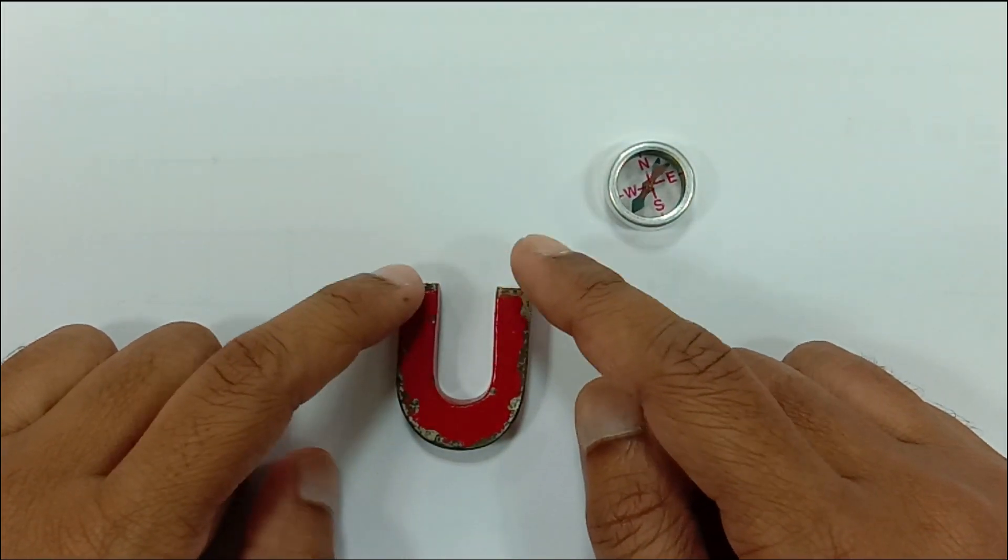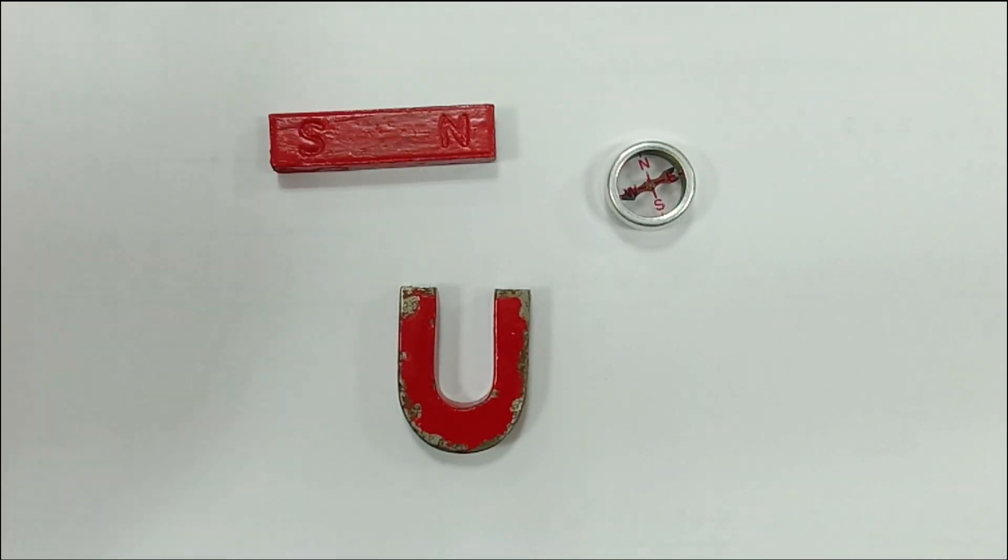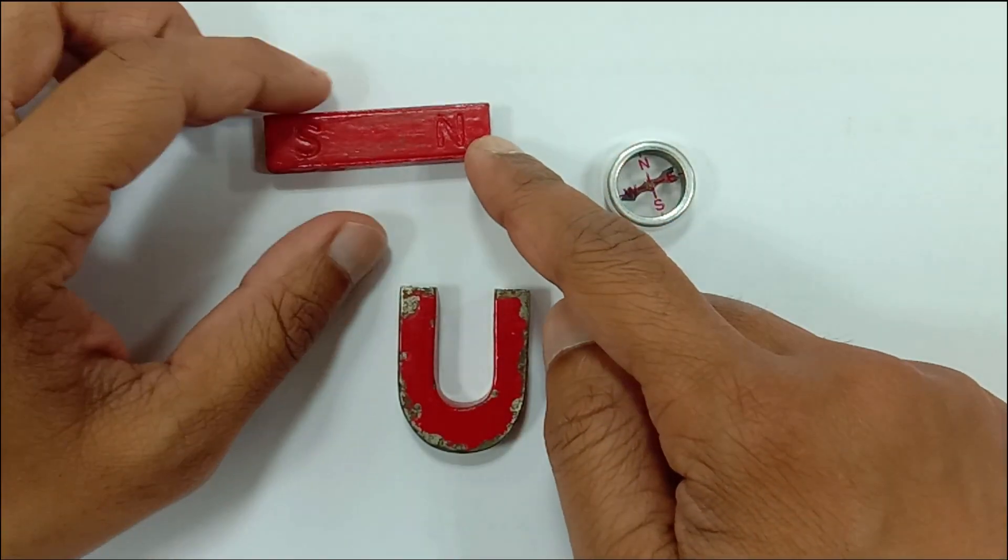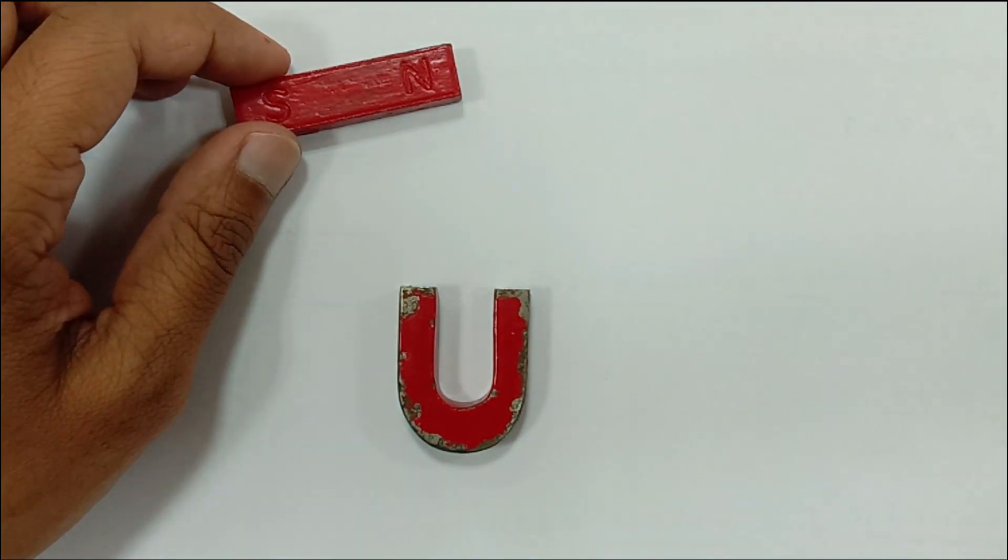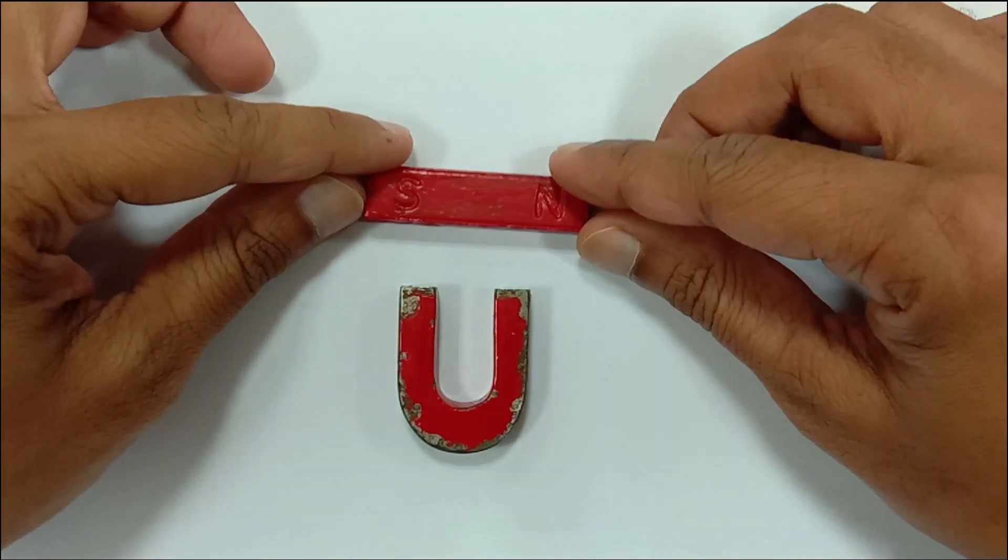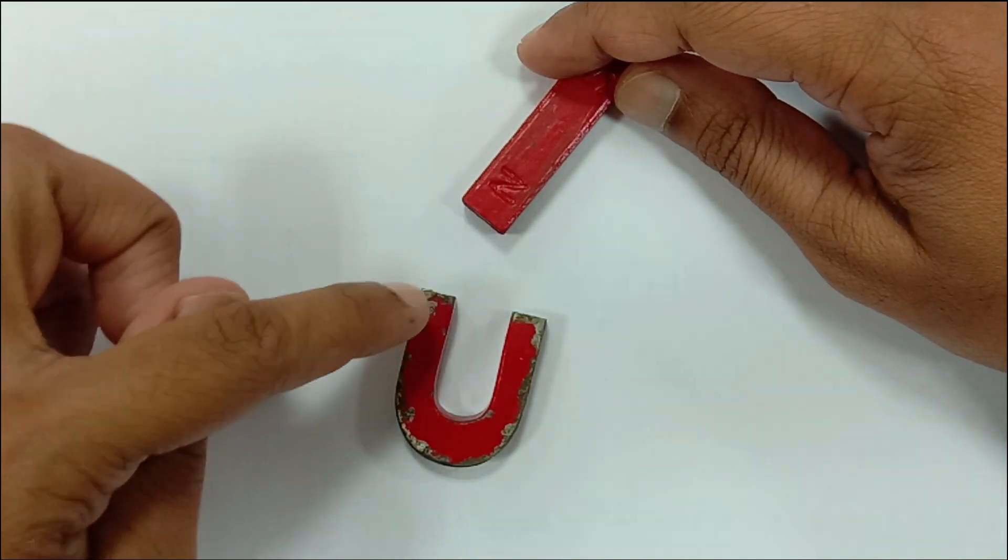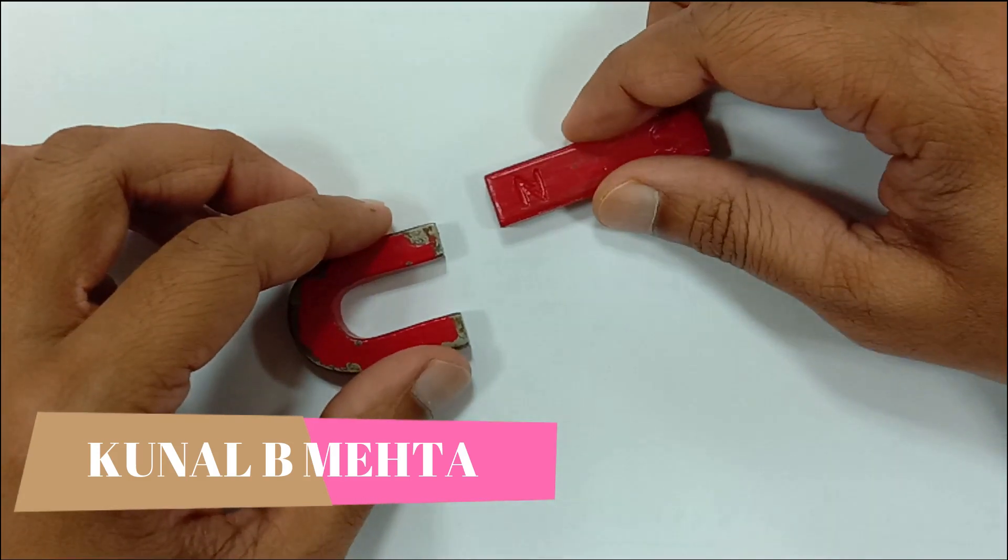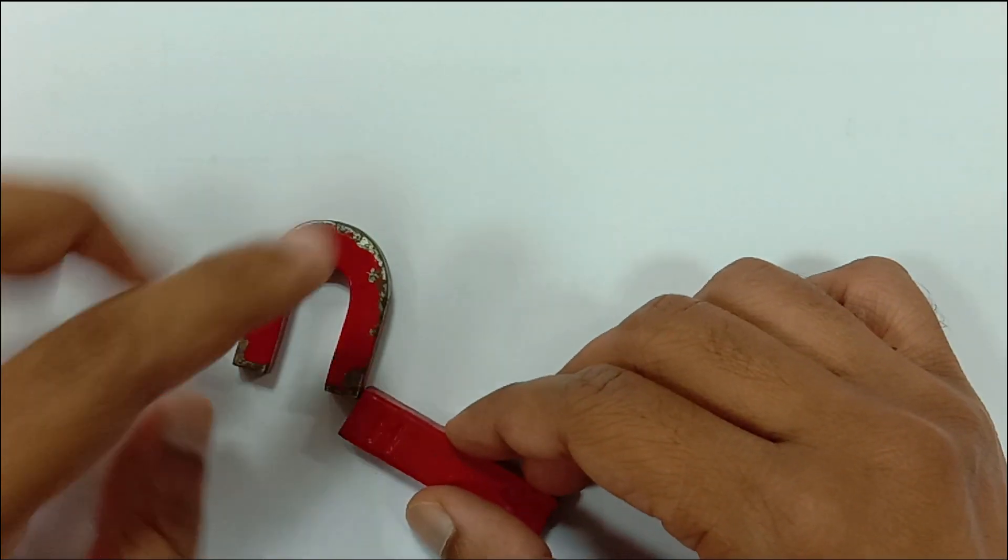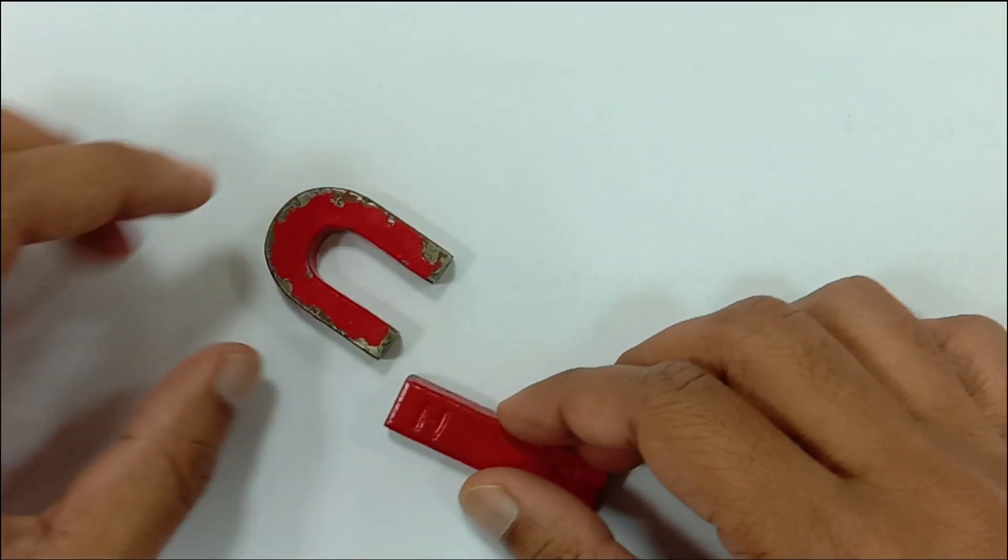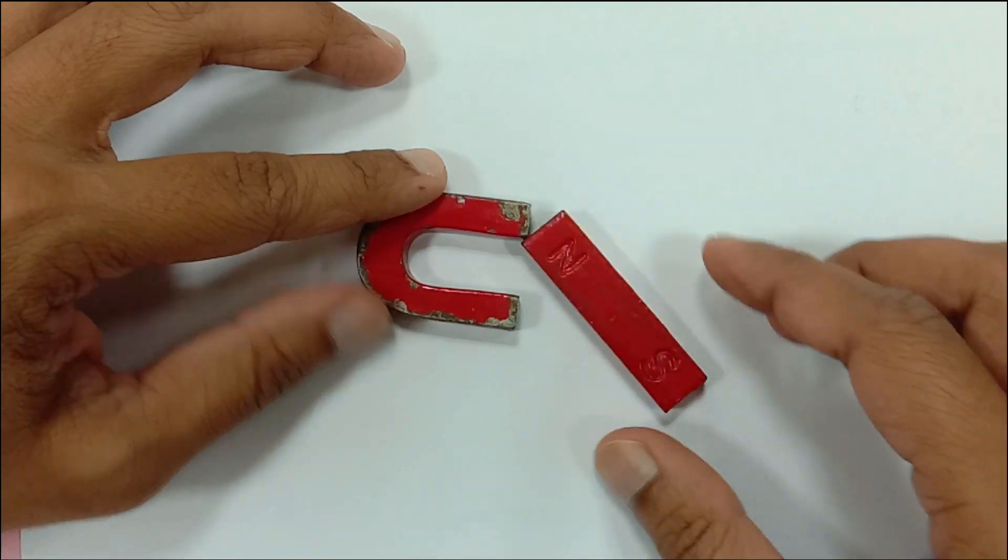I need to first of all know which out of these two ends is north pole and which one is the south pole. So for that I have another bar magnet whose polarity is clearly visible, this is north and this is south. As you can see this is the north pole, now if this is the north pole then both of them are going to repel. See guys, they are getting attracted, that means this is a south pole.